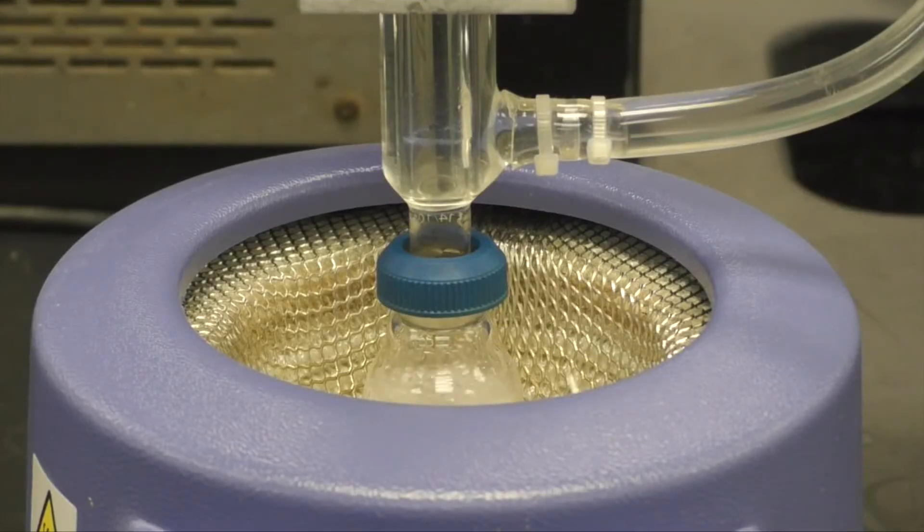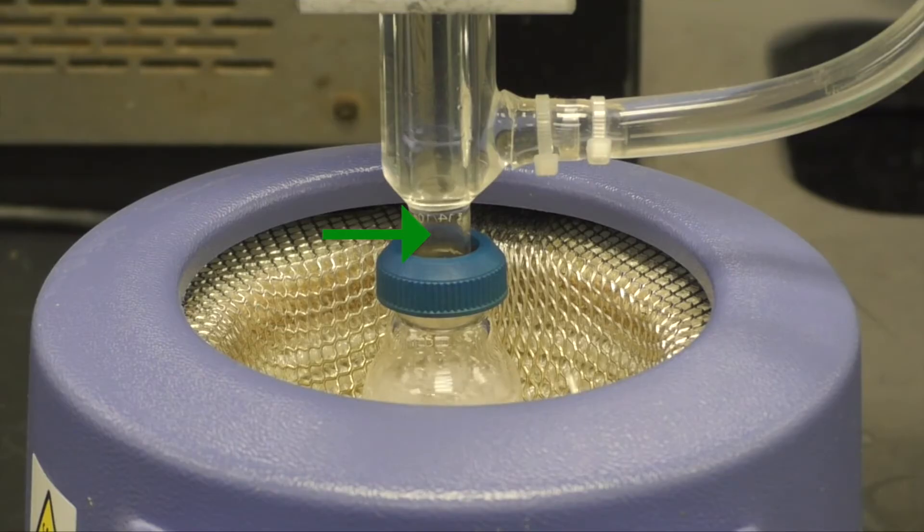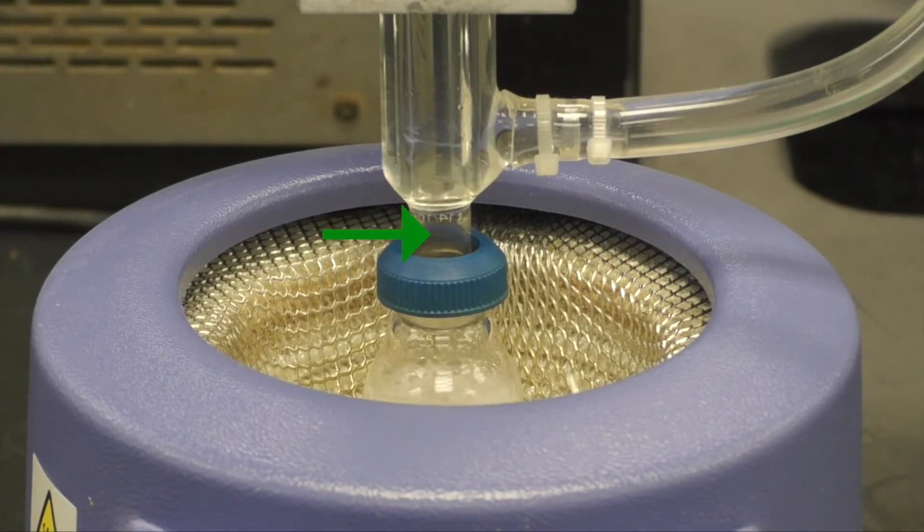When a solution is refluxing, you will see the vapors in the condenser, but the condensate will return to the flask, making it look like it has a soft rain occurring inside.